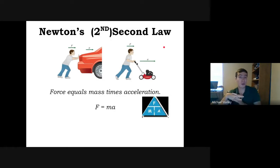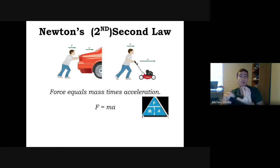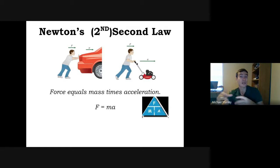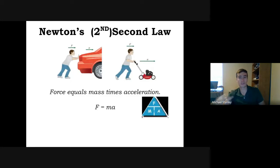The main takeaway from the first law is that things do not change their motion unless some outside, unbalanced force acts on them. Objects at rest stay still; objects in motion keep moving in the same direction. That change could come from you applying force, or from friction and gravity slowing something down, but objects that are still or moving will stay that way unless some other force acts on them.